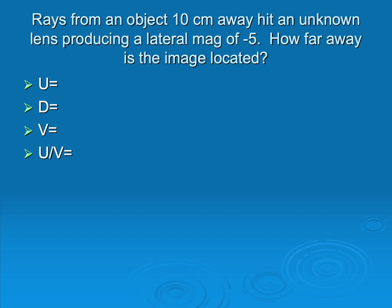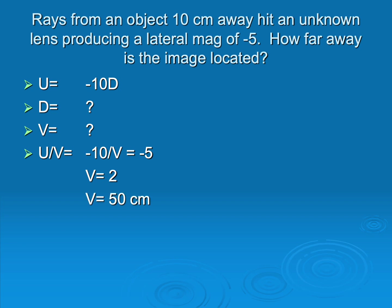In this problem, we've got an object 10 centimeters away hitting an unknown lens, producing a lateral mag of minus 5, and we need to find where the image is. We write down what we know: U is minus 10, U over V is minus 5. We can figure out V from that — V is 2 diopters — and the image is located 50 centimeters away. I could go back and calculate D, but the question only asks about the image.